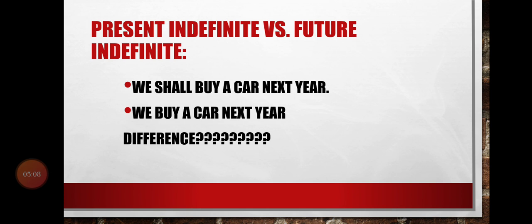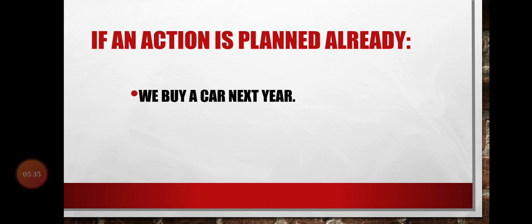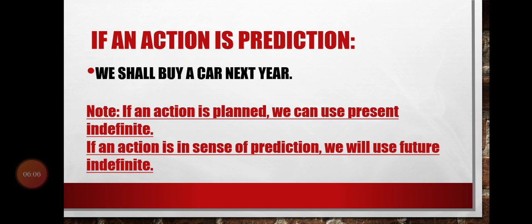Now, Present Indefinite versus Future Indefinite. Consider two sentences: 'We shall buy our cars next year' — that is Future Indefinite — and 'We buy our car next year' — that is Present Indefinite. The difference is: if an action is already planned — meaning you planned it in the past and have made arrangements — we use Present Indefinite: 'We buy a car next year.'